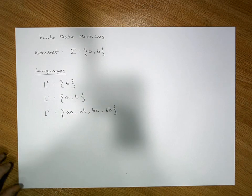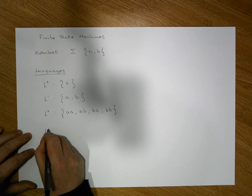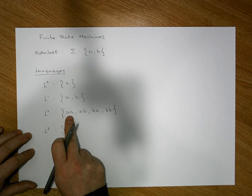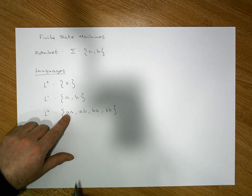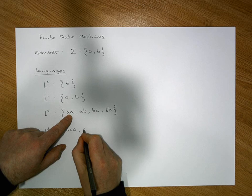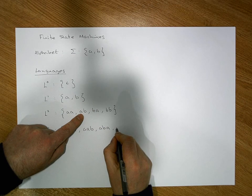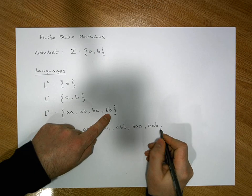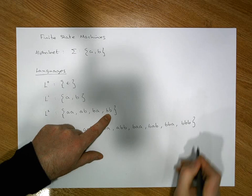For L3, the language of words of length three, we take each word from L2 and concatenate each of our two symbols. So we get: AA followed by A gives AAA, AA followed by B gives AAB, AB followed by A gives ABA, AB followed by B gives ABB, BA followed by A gives BAA, BA followed by B gives BAB, BB followed by A gives BBA, and BB followed by B gives BBB.